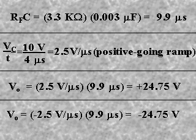The negative-going output voltage ramp is determined similarly. It is equal to the rate of change times the time constant, or minus 2.5 volts per microsecond times 9.9 microseconds, which equals minus 24.75 volts.